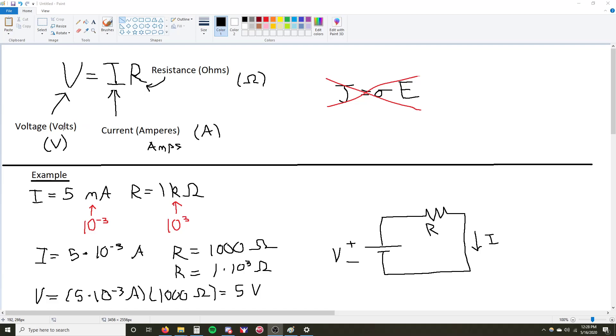The units for voltage are volts, notated as V. The units for current are amperes, commonly referred to as amps, notated as A. And the units for resistance are Ohms, notated by this Greek symbol.